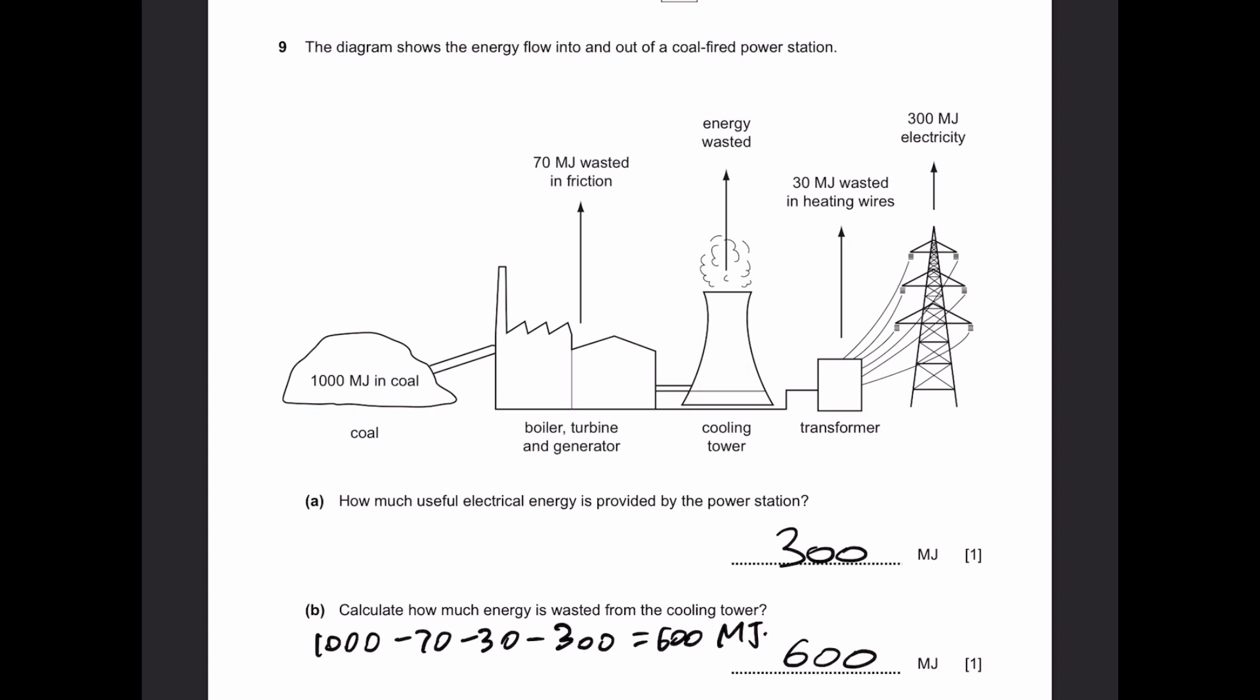Question 9. The diagram shows the energy flow into and out of a coal-fired power station. Part A. How much useful electrical energy is provided by the power station? Useful electricity is simply 300 megajoules as given in the diagram.